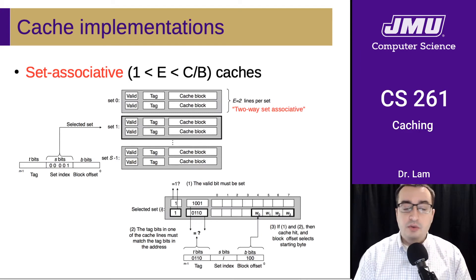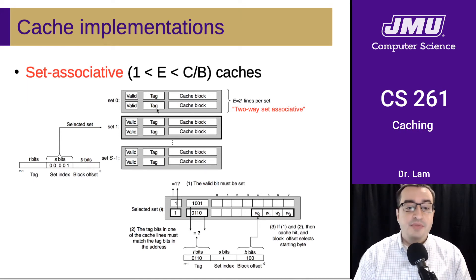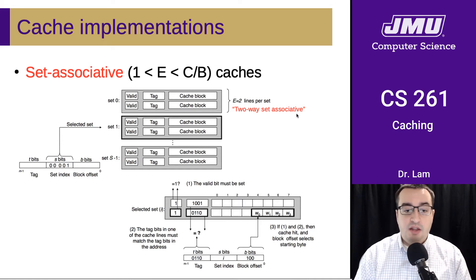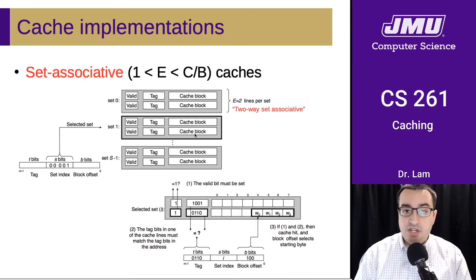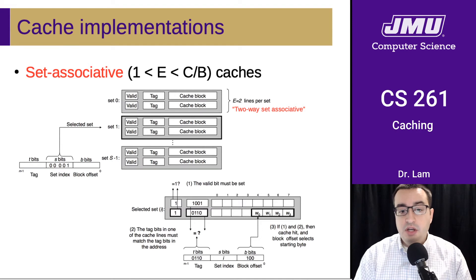If E is greater than 1, then we have a set associative cache, which means there are multiple cache lines inside of a set. For example, with E equals 2, we have two lines per set, also referred to as two-way set associative. This means we still have to do the lookup to figure out which set we're in, but then we also need to check multiple lines inside the cache to find the exact tag we're looking for — involving a bit more work during the lookup.